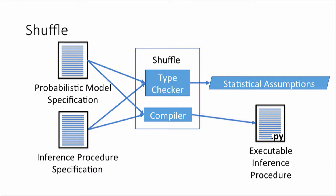This is Shuffle. It takes in a model and an inference procedure, checks the inference procedure against the model — and for things the type checker can't check internally, it generates those as assumptions for a user to hand audit — then compiles the inference procedure to executable Python code. There are many cool pieces to this, but in the interest of time I'm going to show you in more detail what the inputs look like.